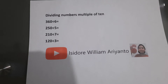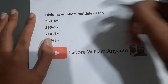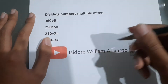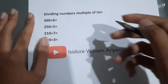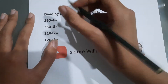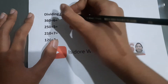Hello friends, today we are going to divide numbers that are multiples of 10. So this is 360 — you just remove the zero and then divide. For example, 360 divided by 6 becomes 36 divided by 6.